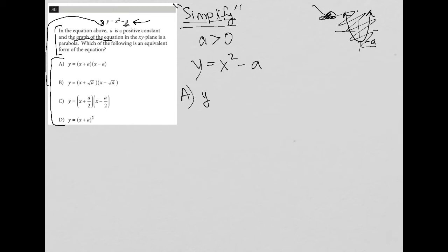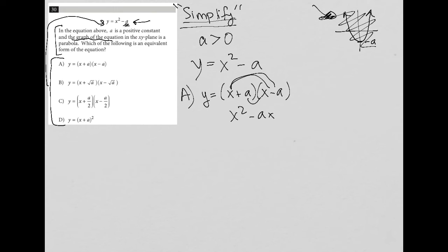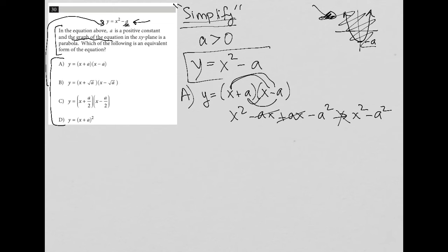Choice A is y equals (x plus a)(x minus a). Using the FOIL method: x times x is x squared, x times negative a is negative ax, a times x is positive ax, and a times negative a is negative a squared. The middle terms cancel, leaving x squared minus a squared — which is not equal to x squared minus a. So choice A is eliminated.